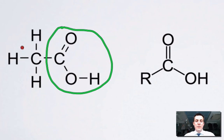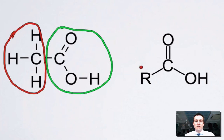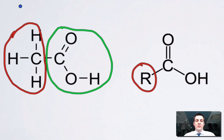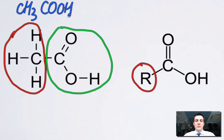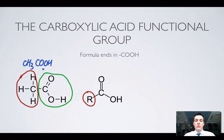If I don't specify what's on this end and call it a general R group, then I have R, C, double bond O, OH. If I write the formula of these things, I write it as COOH. So CH3COOH. Some people call this CO2H, but in the WJEC course they prefer you to use COOH.